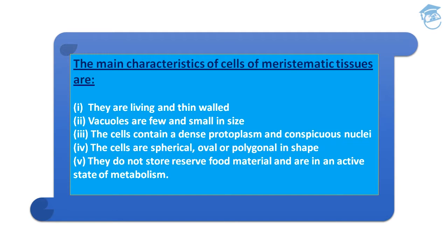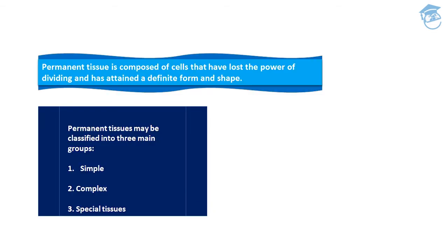The main characteristics of meristematic tissue cells are: they are living, thin-walled, vacuoles are few and smaller in size, they contain dense protoplasm and bigger conspicuous nuclei. Meristematic tissue cells are spherical, oval, or polygonal in shape, they do not store reserve food material, and they are in an active state of metabolism because they keep on dividing.